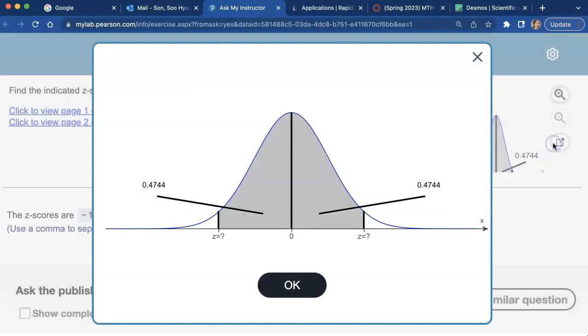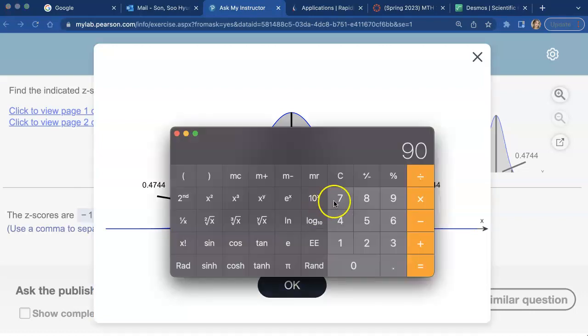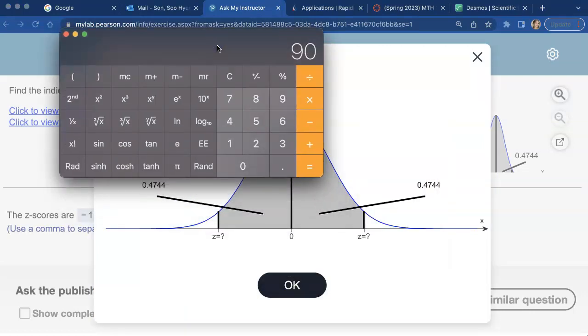Notice in this graph picture they have this half as 0.4744 and this other half as 0.4744. They are the same, so I'm getting a calculator open and I'm going to add them together, 0.4744, actually let's just do it times two because they're the same. So that much area is included in the middle.